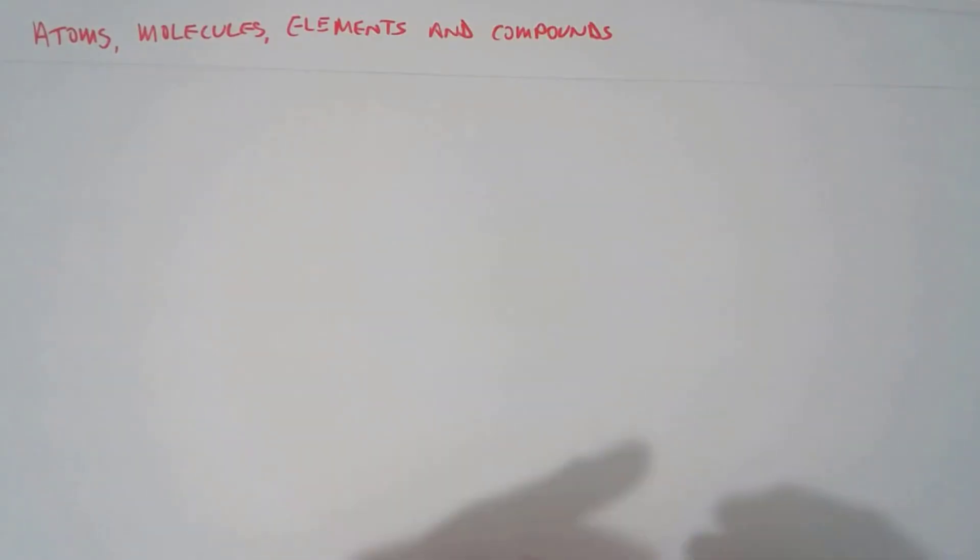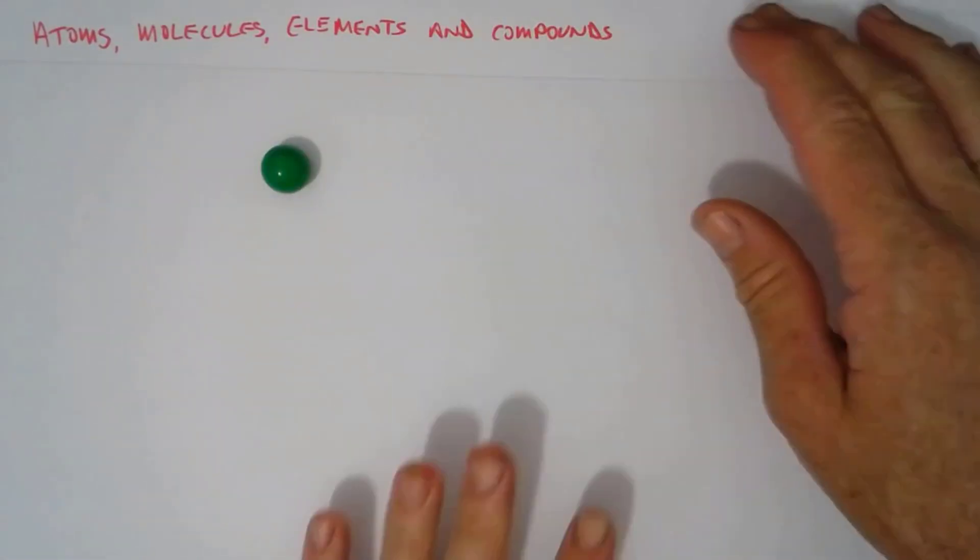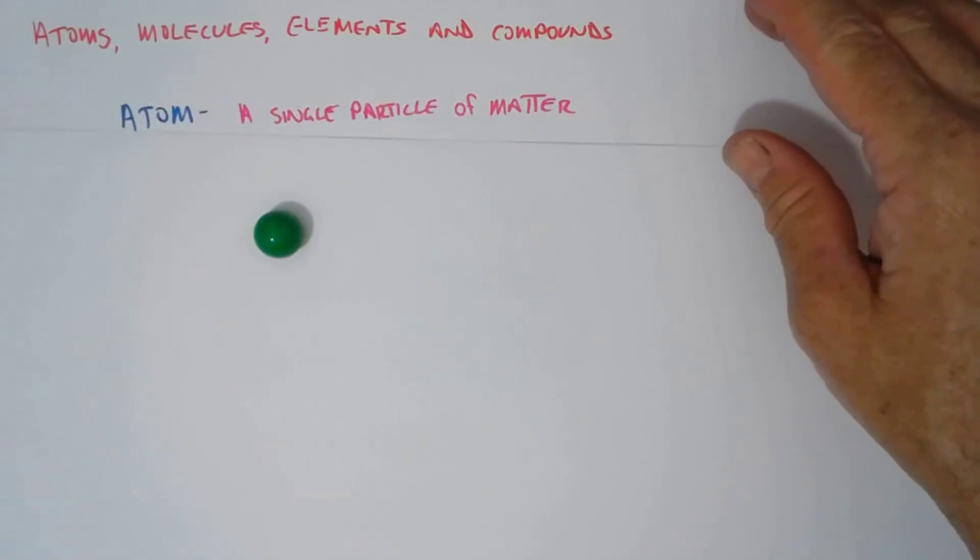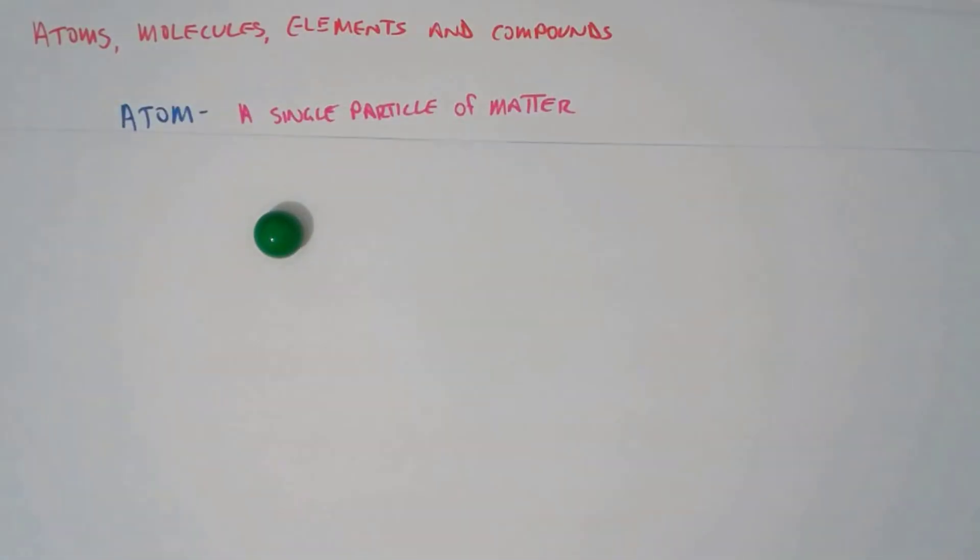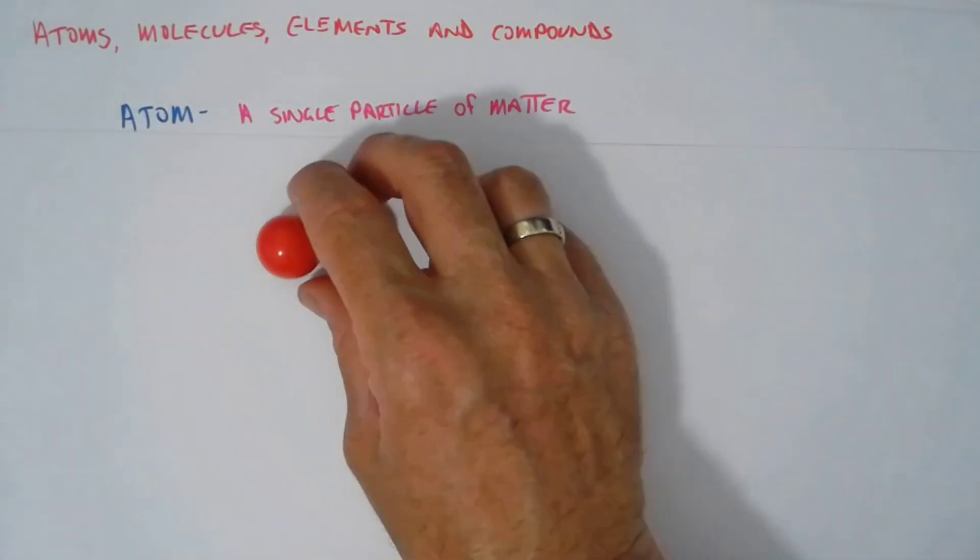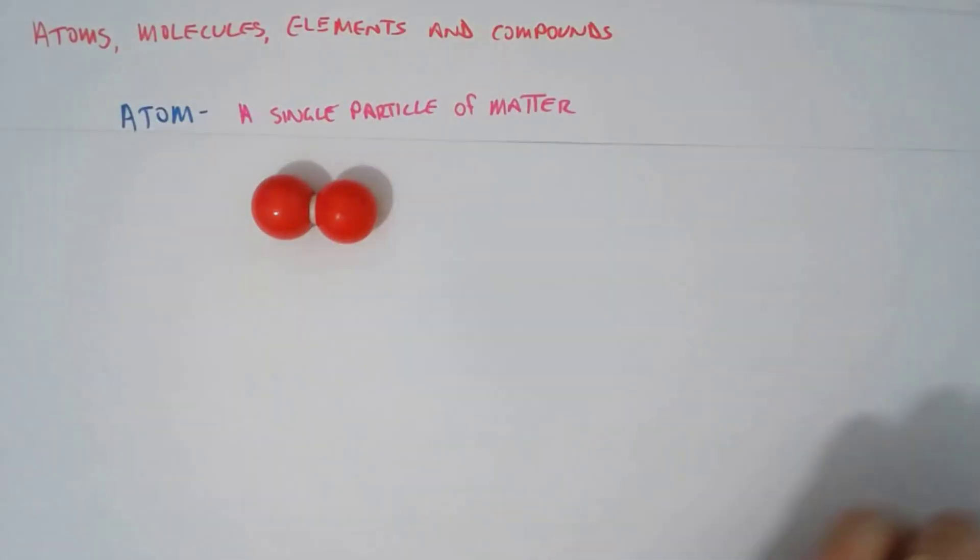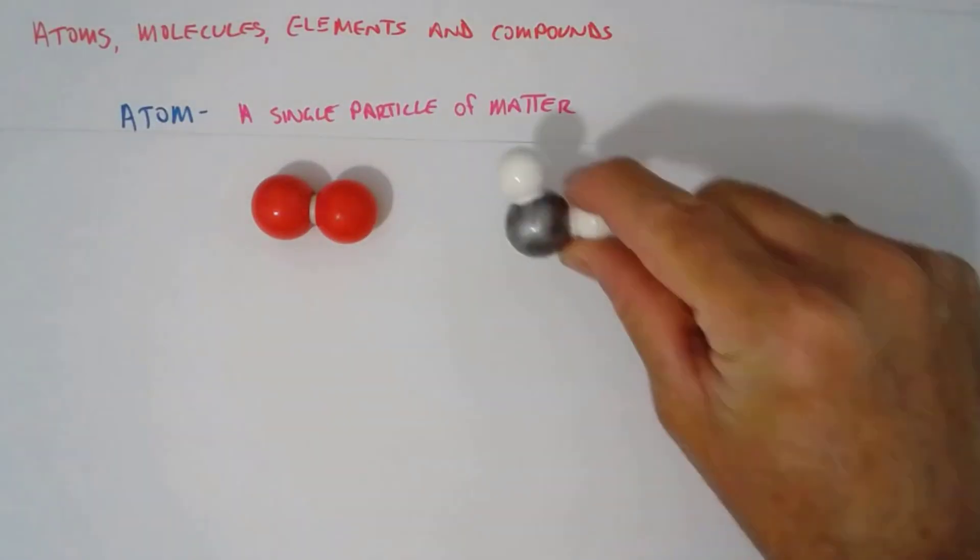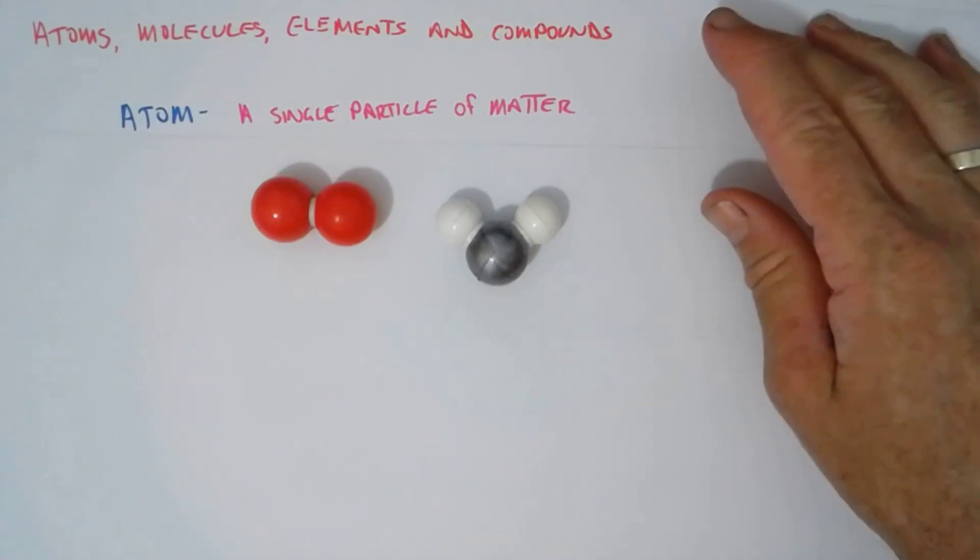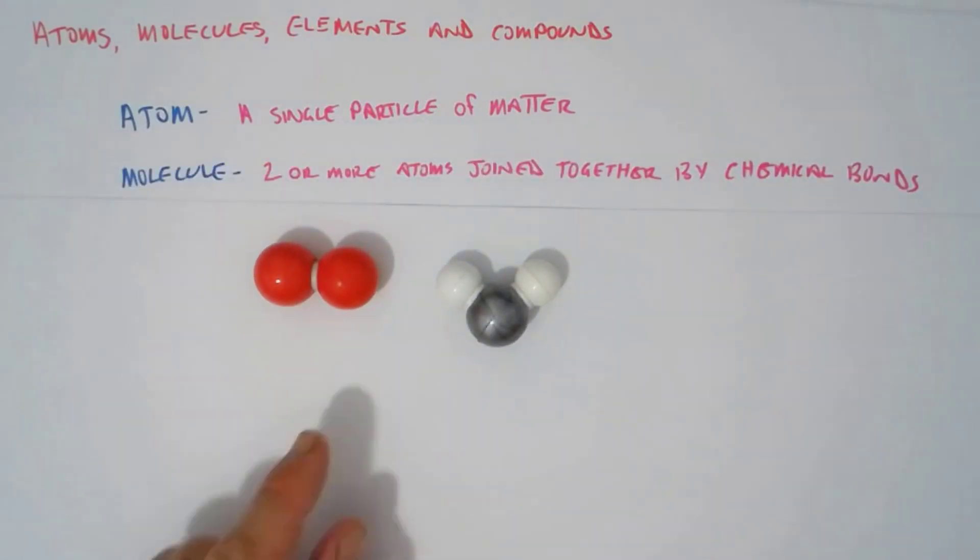Atoms, molecules, elements and compounds. Let's go through and do some definitions. An atom is a single particle of matter. A molecule is made up of two or more atoms that are joined together by a chemical bond.